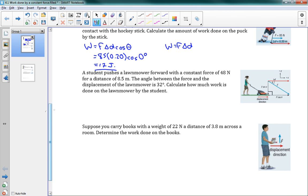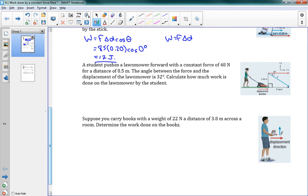Now we've got a second problem here. This is a more normal sort of work problem, because we have an angle. So a student pushes a lawnmower forward with a constant force of 48 newtons over a distance of 8.5 meters, and there's an angle here of 32 degrees. So again, we can just plug in our numbers, F delta D cosine theta.